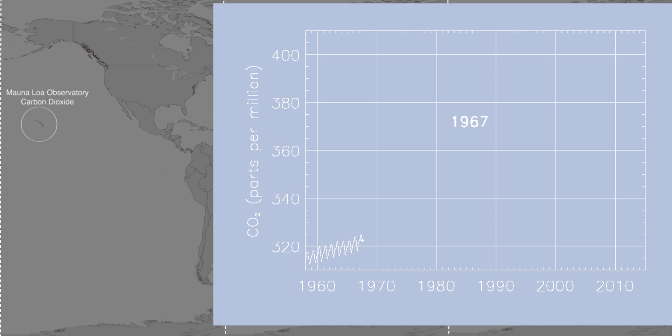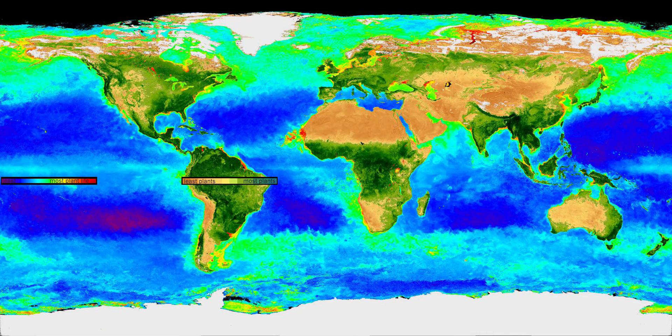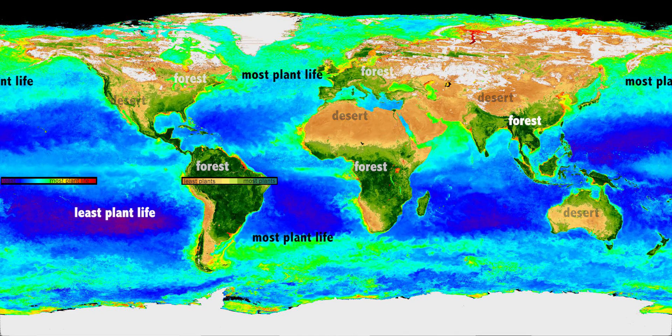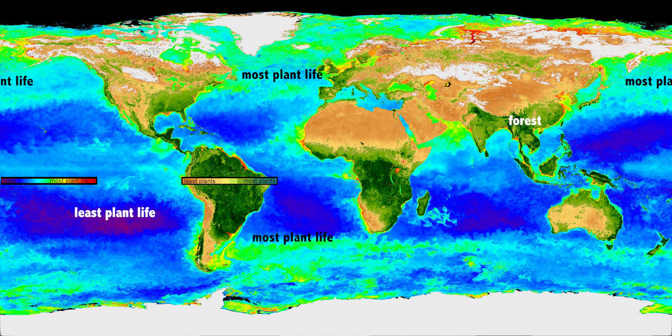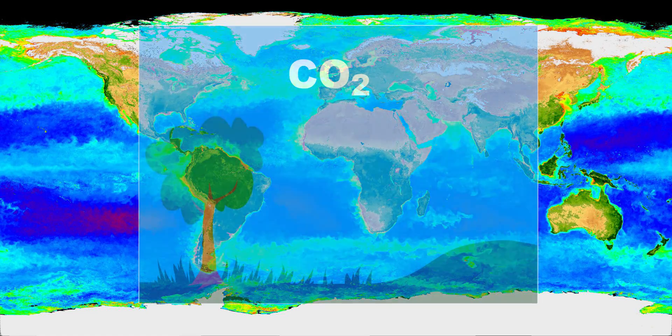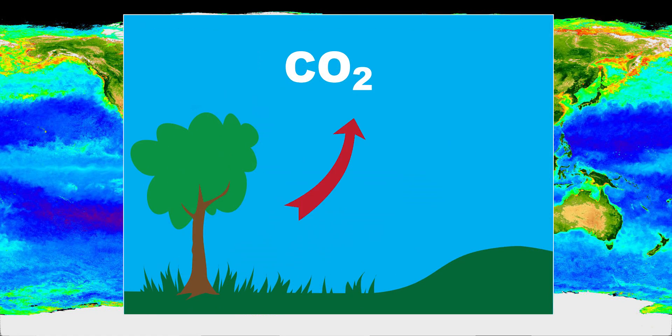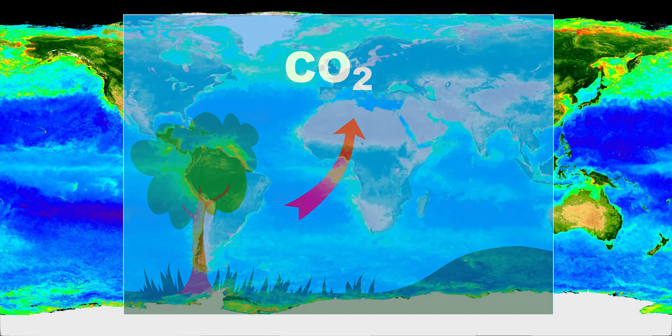A fall and rise occurs each year, and the explanation for that lies in the Earth's plants. This image shows plant life measured by satellites. Plants on land are shown in green, while plant life in the ocean is colored green, red, and yellow. Plants take in carbon dioxide from the atmosphere, use it in photosynthesis, and release it when they die or go dormant.